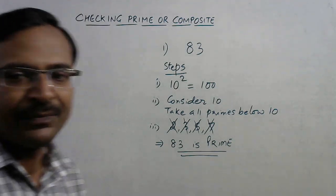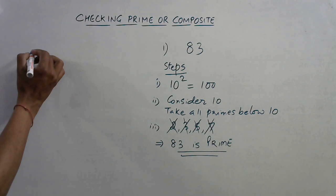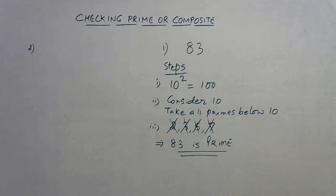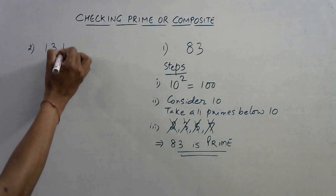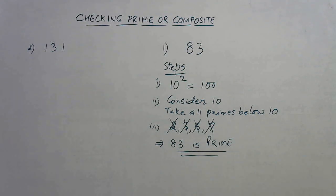Now I'm taking the example of a larger number like 131. Okay, now we need a square number which is just more than 131, so if you know, 11 square is 121 and 12 square...